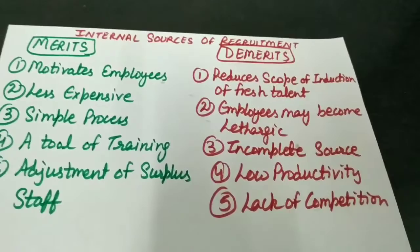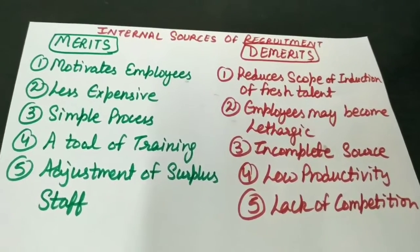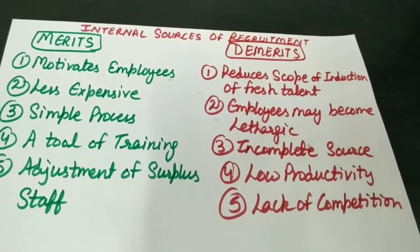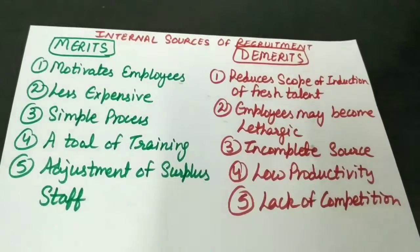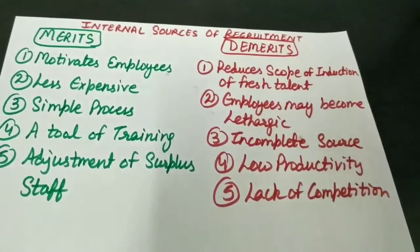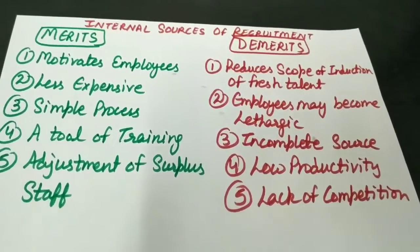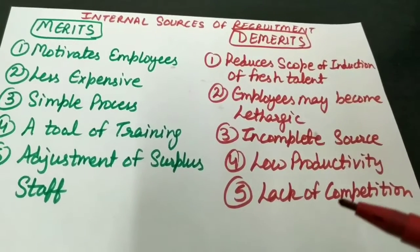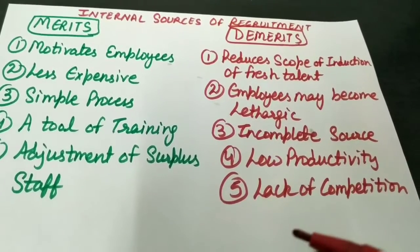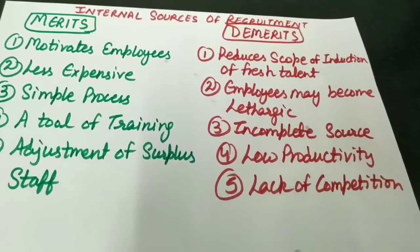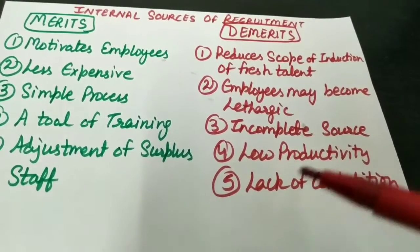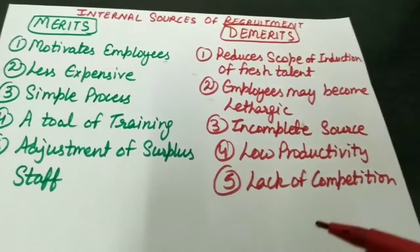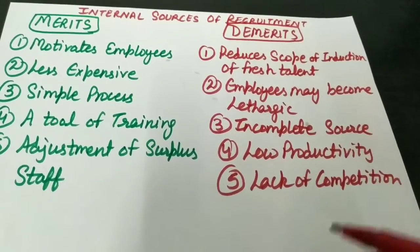Second demerit is employees may become lethargic. Ab employees jo hain they become basically lazy because they are sure of time-bound promotions. Employees know ki they will be promoted on the basis of their seniority, and that makes them lethargic or lazy in work performance. Next demerit is incomplete source. Internal source of recruitment jo hai, koi bhi organization it cannot fill all its vacancies from only internal sources. Jo existing staff hai, they may be insufficient or they may not fill the eligibility criteria of the jobs.